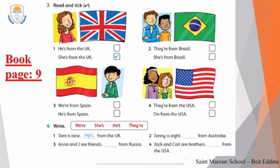Number two: 'They're from Brazil' or 'She's from Brazil.' Of course it is the first one — they're from Brazil — because they are two boys. Number three: 'We're from Spain' or 'He's from Spain.' He is one boy. Number four: 'They're from the USA' or 'I'm from the USA.' They are two, so it is 'they're from the USA.'